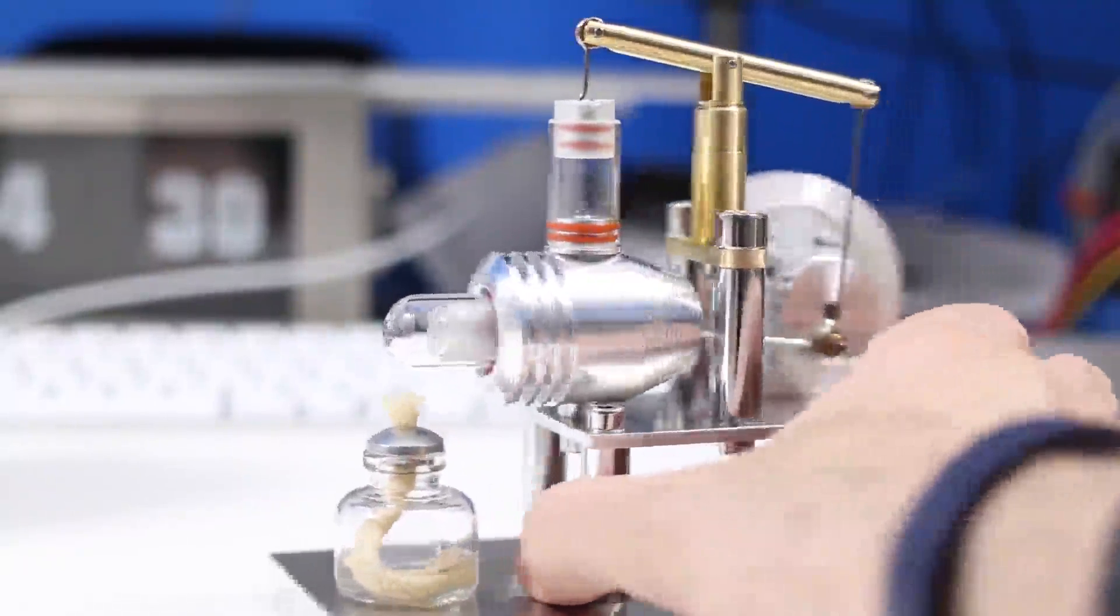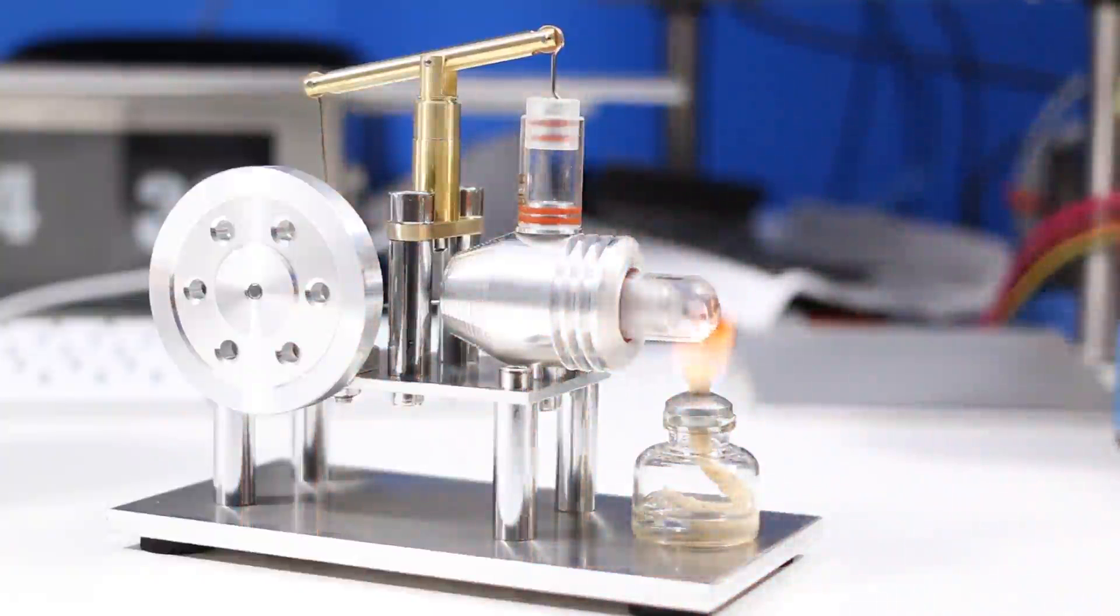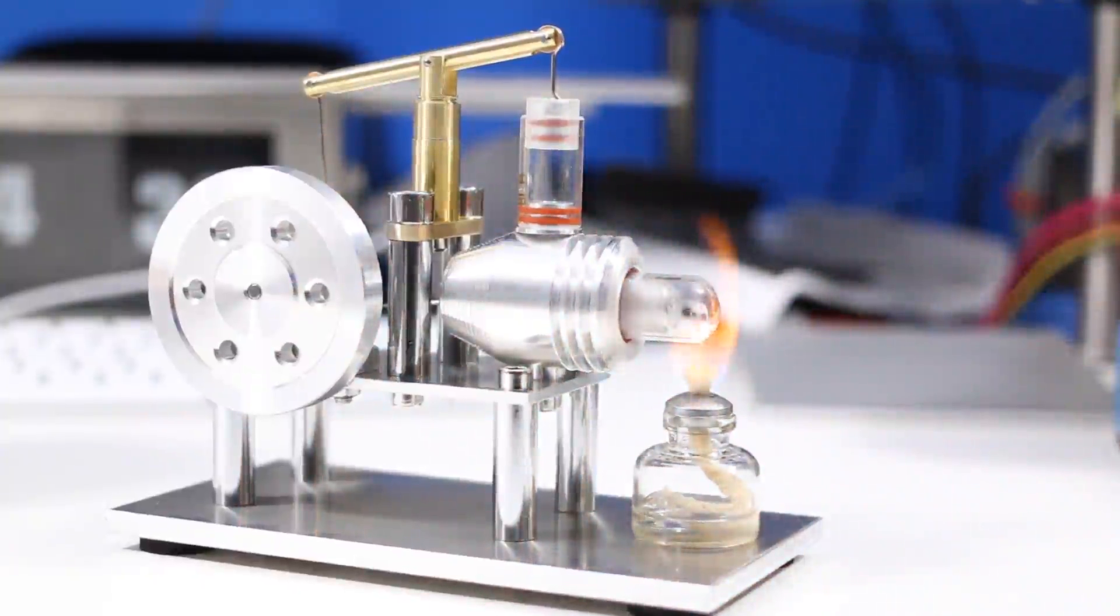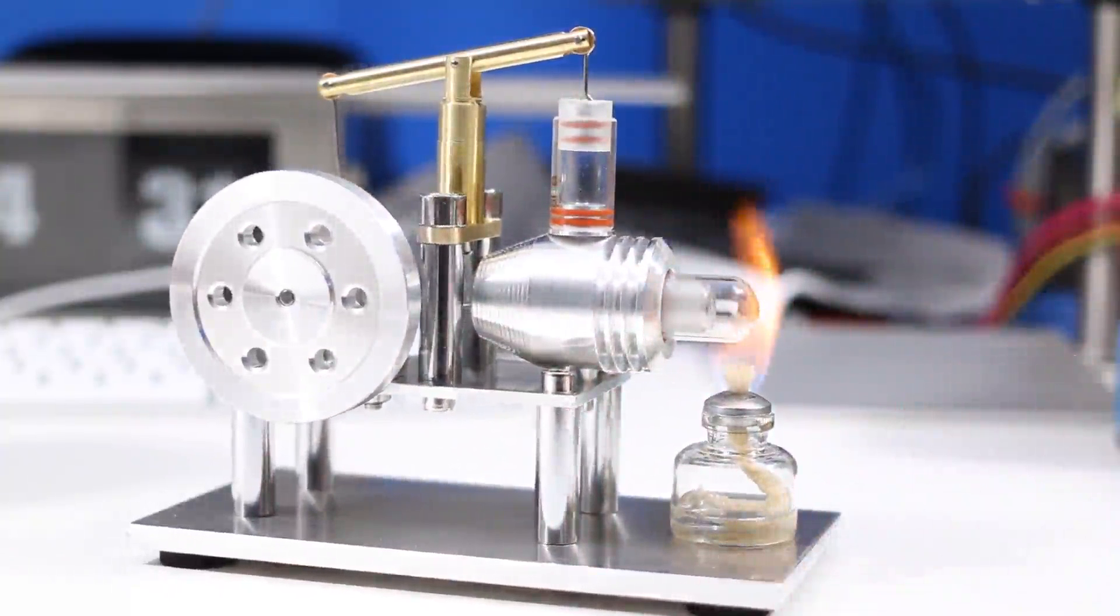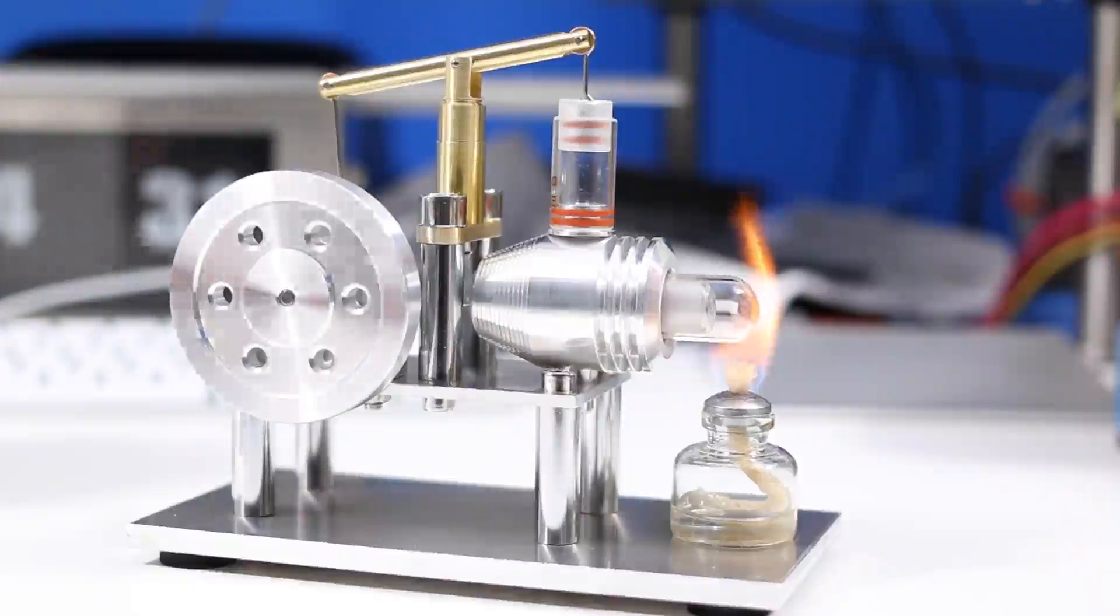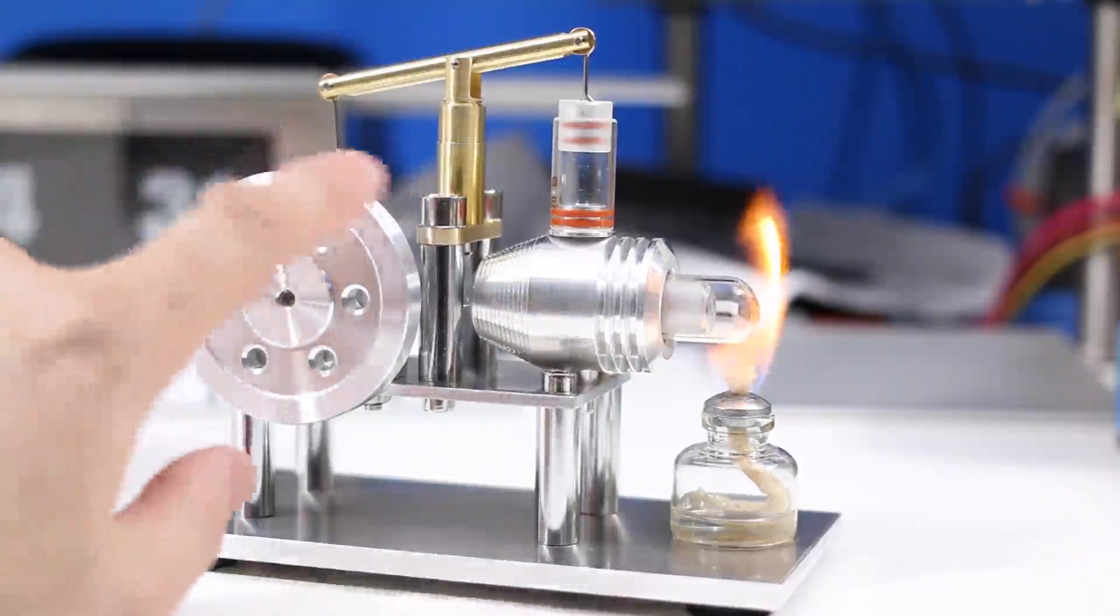Now, without further ado, I'm going to light her up. Okay, so I'm applying some heat to our lamp. And now we are lighting up the lamp. It's got 91% isopropyl alcohol in it. I'm going to give it a few seconds to heat up that air.